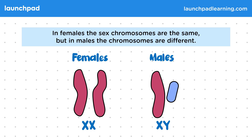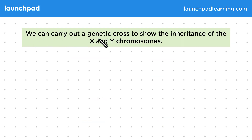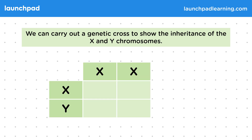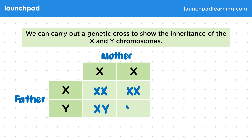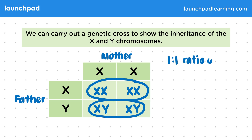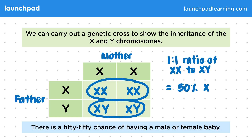So what's the probability of having a child with a pair of XX or XY chromosomes? We can carry out a genetic cross to show the inheritance of the X and Y chromosomes. The mother would have XX and the father XY. Filling out this Punnett square, we end up with 50% XX and 50% XY — a 1 to 1 ratio. There is a 50-50 chance of having a genetically male or genetically female baby.